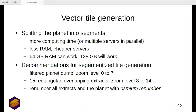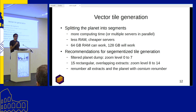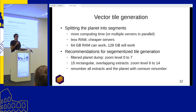Splitting the planet into segments makes vector tile computation require less memory, though you need more time or multiple servers in parallel. You can get it working with 64 gigabytes of RAM, and it's a little easier if you have 128 gigabytes. I recommend having a filtered planet dump for zoom levels 0 to 7 and about 15 rectangular overlapping extracts for zoom levels 8 to 14. You should not split by equal degrees but by where most OSM data is located — otherwise the largest extract will still require the most memory. You should also renumber all extracts with osmium renumber to save even more memory.